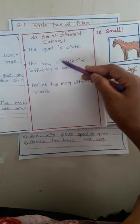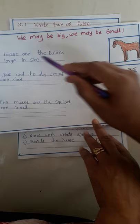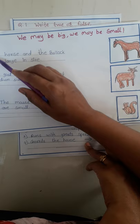Next topic: do you know colors? We are of different colors. The egret is white, the crow is black, the buffalo too is black, and the peacock has many different colors.